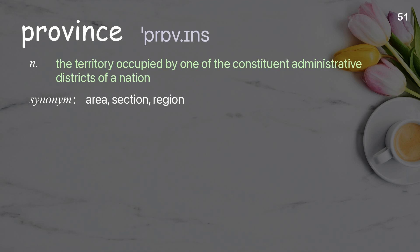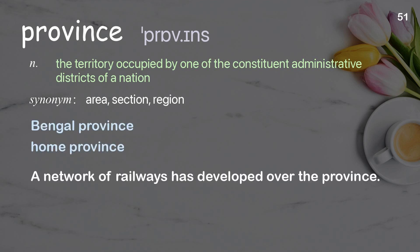Province: the territory occupied by one of the constituent administrative districts of a nation. Examples: Bengal Province, home province. A network of railways has developed over the province.